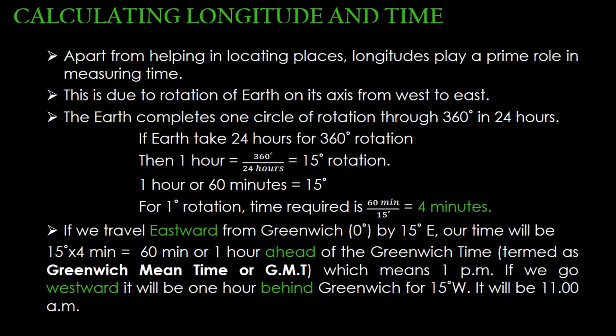So if we travel eastward from Greenwich (0 degrees) by 15 degrees east, our time will be 15 degrees into 4 minutes, which is equal to 60 minutes or 1 hour ahead of Greenwich time, which means 1 pm. If we go westward, it will be 1 hour behind Greenwich — for 15 degrees west it will be 11 am.